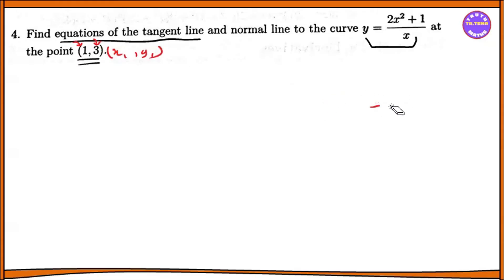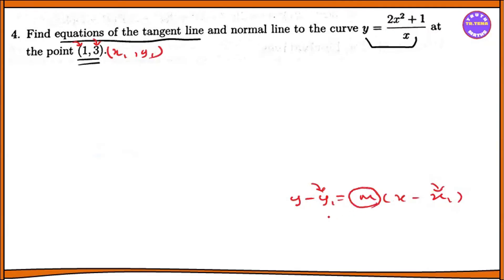Let's look at the tangent line equation formula: y minus y1 equal to m times x minus x1. Now let's look at an example. Let m be the difference between y1 and x1. Now let's look at y equal to 2x squared plus 1 by x, and find the tangent line.